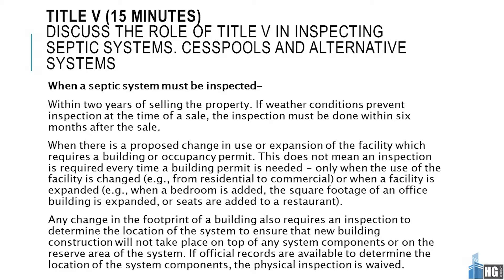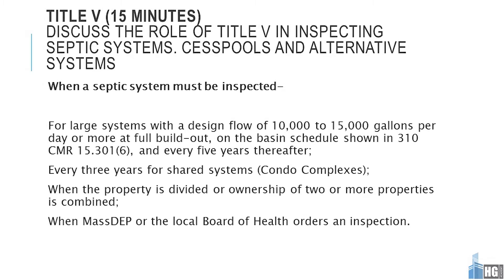Title V inspections are also required during any change in the footprint of a building, to determine the location of the system and ensure new construction will not take place on top of system components or reserve areas. If official records are available to determine the location of system components, a physical inspection may be waived. Additionally, for large systems with design flows of 10,000 to 15,000 gallons per day or more, inspections are required per basin schedules shown on 310 CMR 15.301 subsection 6, and every five years thereafter.